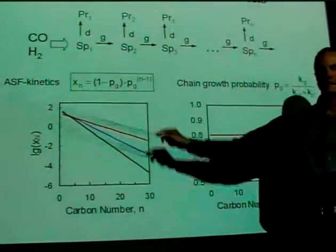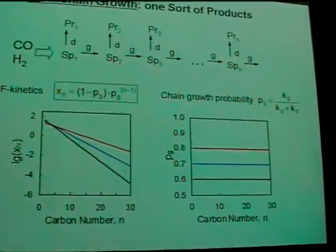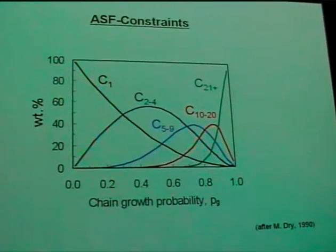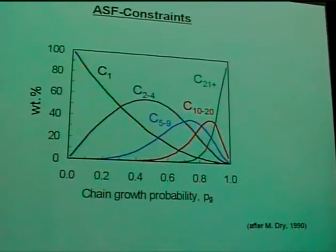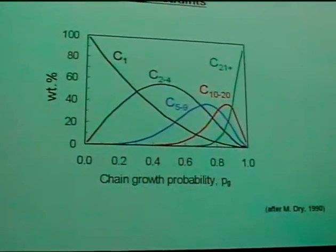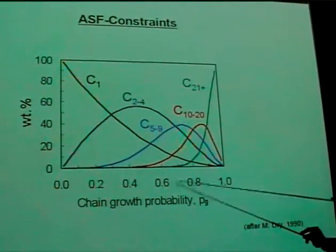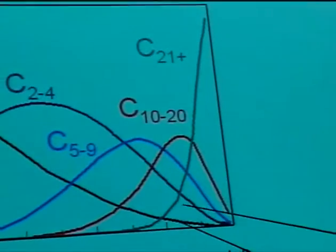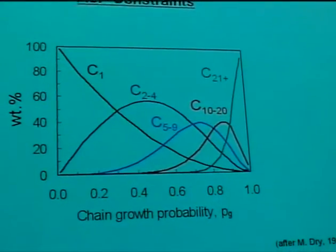ASF kinetics is also named after Anderson, who adapted it. Due to Schultz-Flory kinetics we have certain constraints on product selectivities. We can plot certain carbon number fractions as a function of chain growth probability: at probability zero we don't have any chain growth, basically making only methane. As we increase chain growth probability, methane selectivity drops, and probability one means an infinitely long chain only. Between these extremes, for example, we find the maximum middle distillate selectivity is obtained at a chain growth probability of around 85%. To maximize middle distillate yields we go for higher chain growth probability and crack the products down.